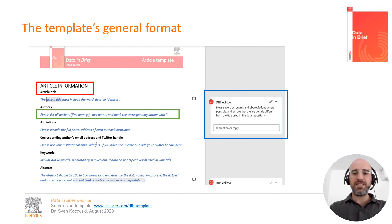Let us now have a closer look at the template itself. What you see here is the very first page of the template proper. This page asks you to provide the most general information on your article — for example, its title, the authors of the article, their affiliations, etc. Please note that the abstract should be on the described data set only, not on results or discussion.